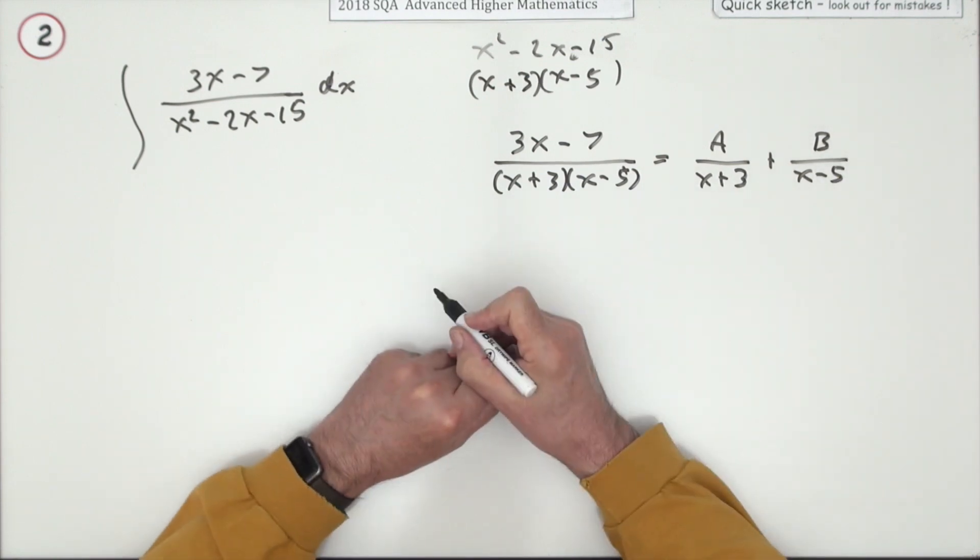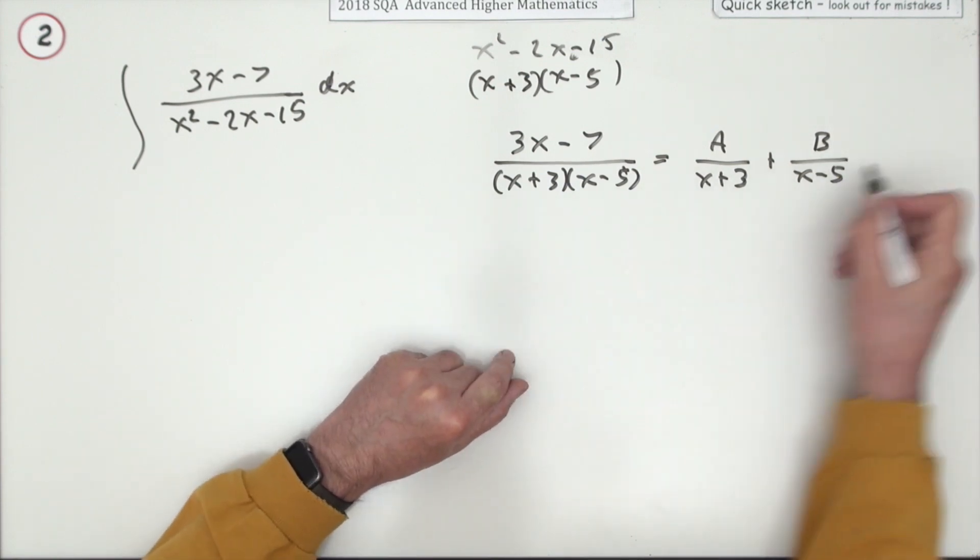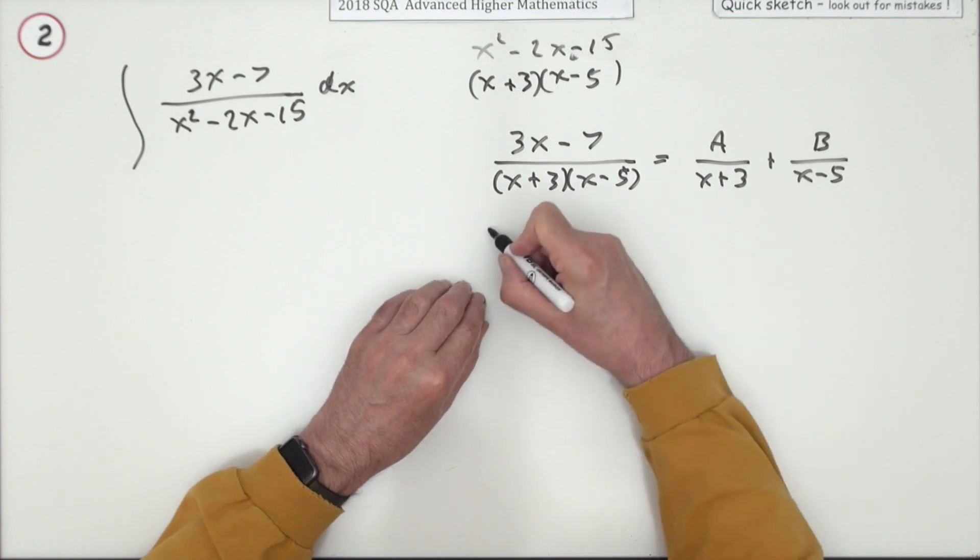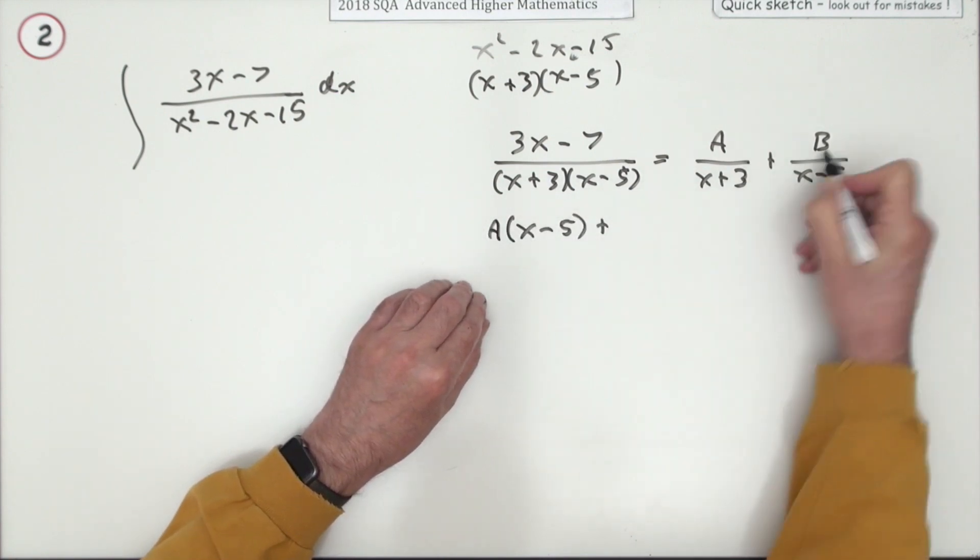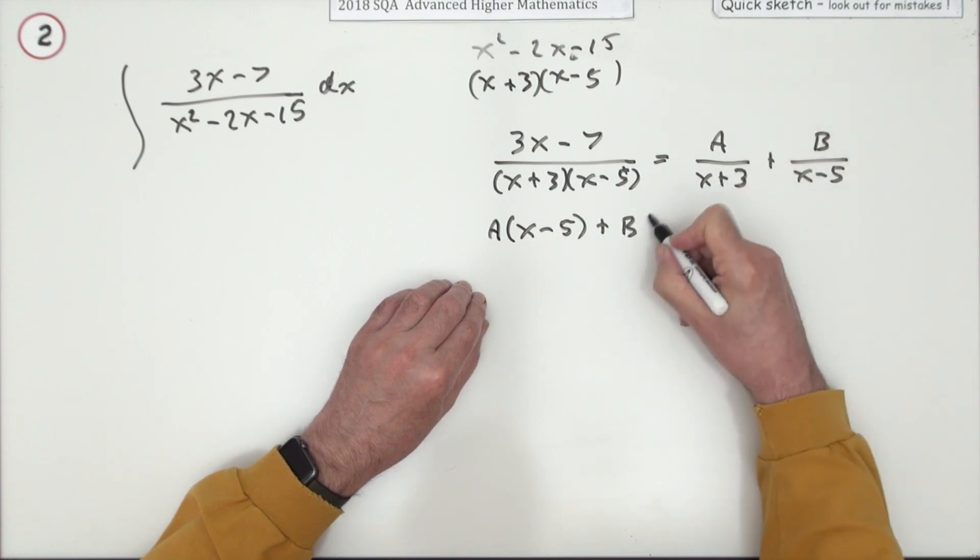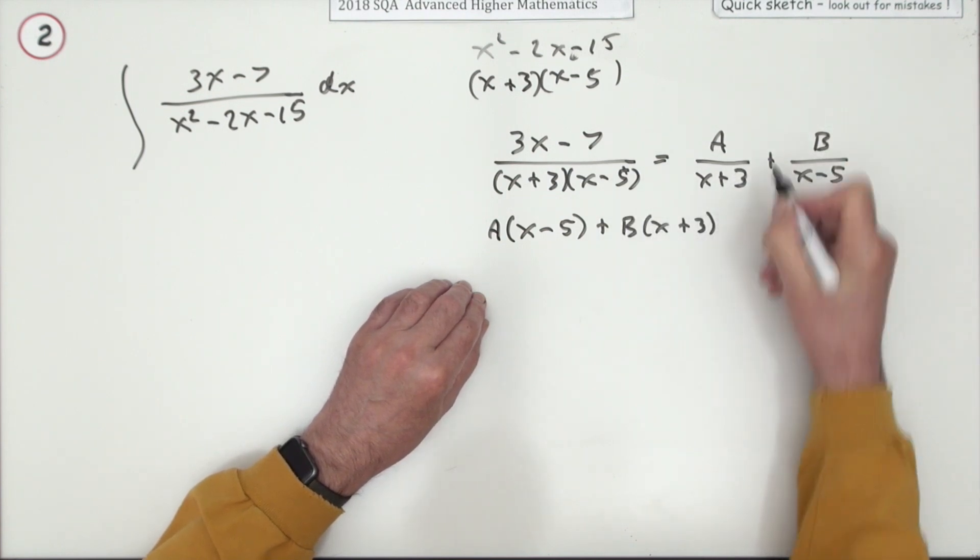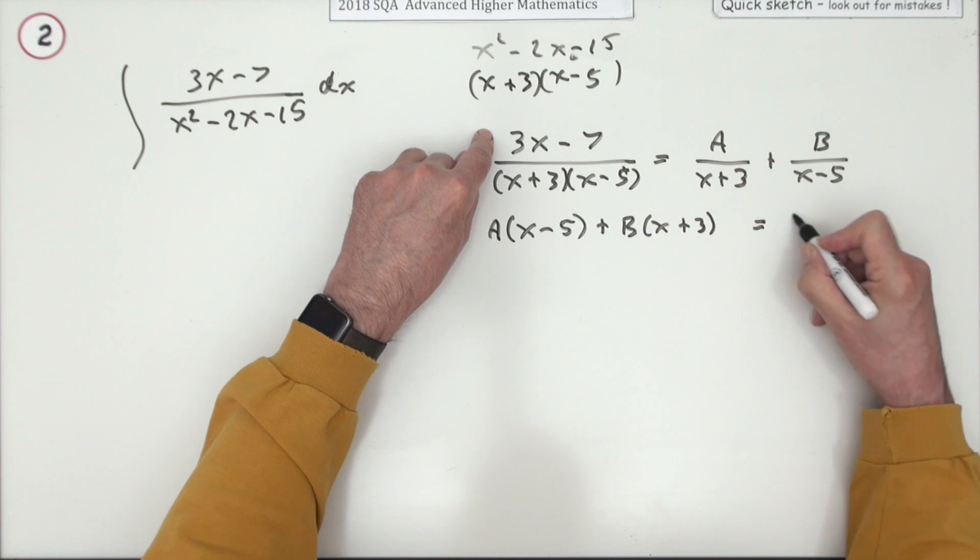Now if you were to add them back together, you would have A(x - 5) + B(x + 3) as the numerator. That must be the same as this numerator: 3x - 7.